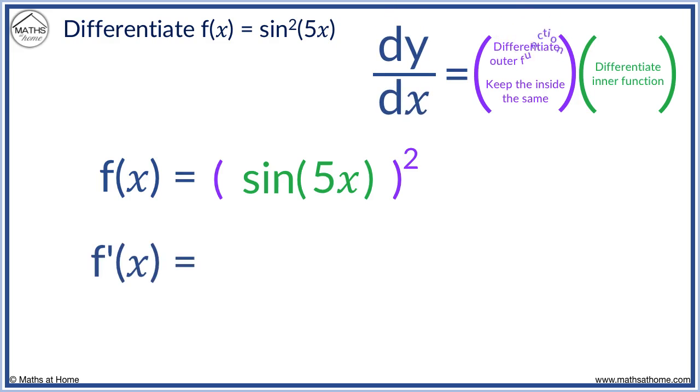We differentiate the outer function. So 2 comes down and 2 minus 1 equals 1. We don't write power 1. We keep sine 5x as sine 5x. We must remember to multiply this by the derivative of the inner function.